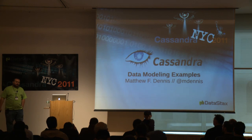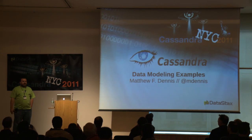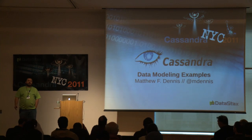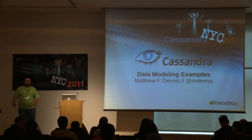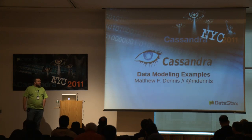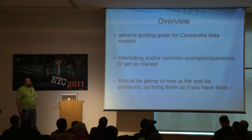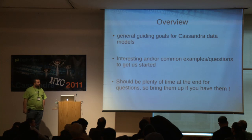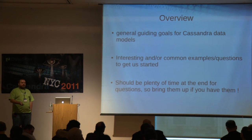Today's talk: Data Modeling Examples. I've got roughly a half hour of slides, two examples that we'll do in depth, and then I'll open it up to questions. If you have any questions about data modeling or algorithms in Cassandra — how you might model something, how you might do it — this would be a good forum to ask. Starting off, I'm going to cover a general overview of goals in Cassandra when modeling data, then a few example questions, and then questions at the end.